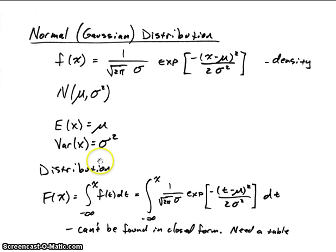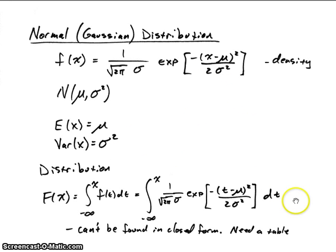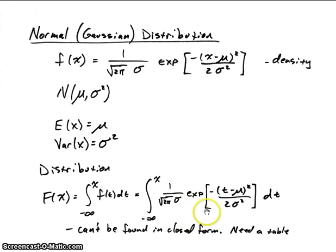All we need for this function are the two parameters mu and sigma squared. So by knowing those two parameters, we know what our density function is, if we know it's a normal distribution. The cumulative distribution function is, by definition, the integral from minus infinity to x of our density function. We'll use t as our integrating variable since x appears in the limit.